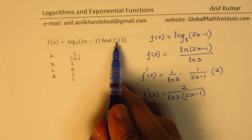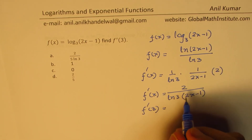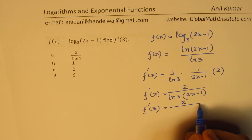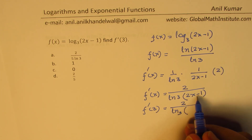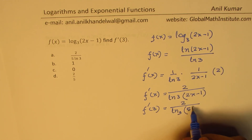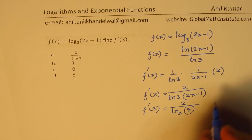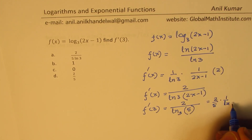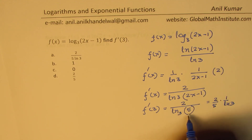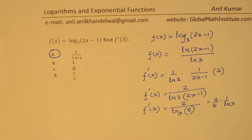Since we need the derivative at x equals 3, substituting gives 2 over ln(3) times (2·3 minus 1), which is 2 over ln(3) times 5, giving 2 over (5 ln 3). That is option number 1, so A is the correct answer.